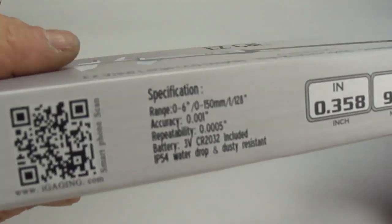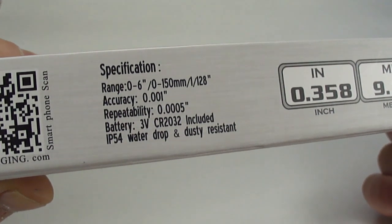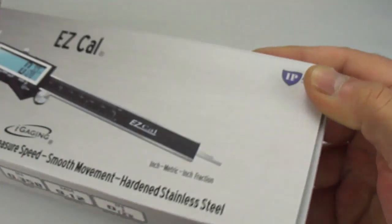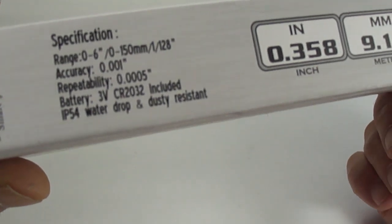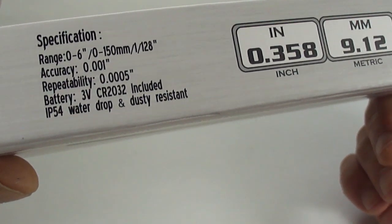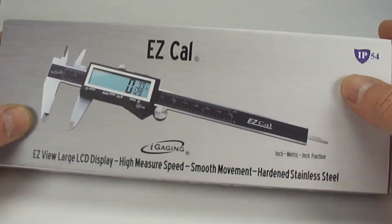Okay, now there's the specifications. You can have a read of them: range, accuracy, the battery. The nice thing about them, they're actually IP54 rated, which means they're water drop and dust resistant. So I thought, great.